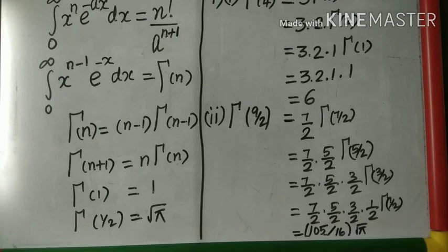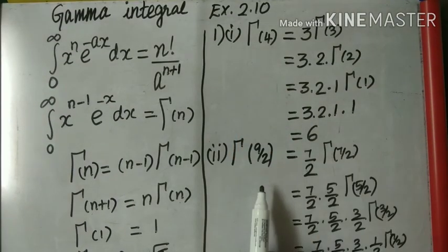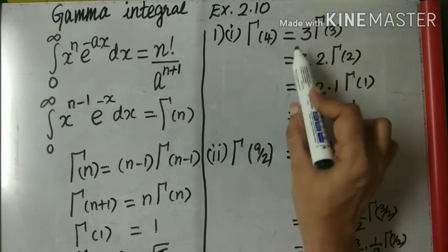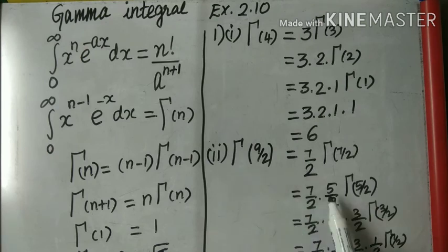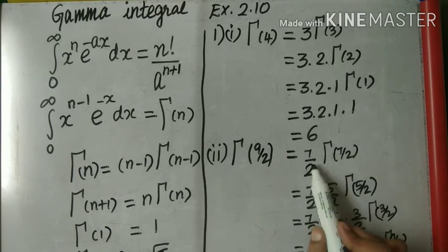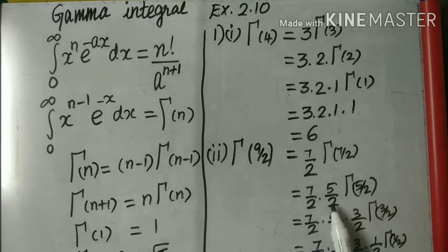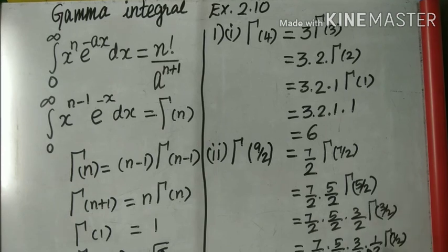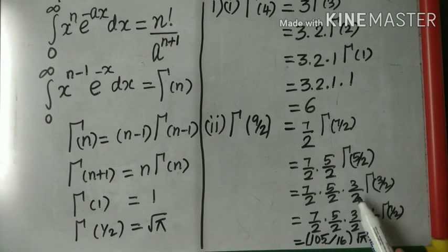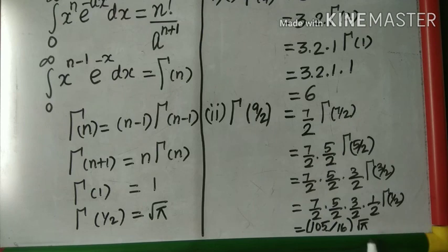We must know how to write gamma for a whole number and also for a fraction. For a whole number like 4, write the previous number then gamma of that, repeatedly until reaching gamma 1 which equals 1. For a fraction like 9/2, the previous number is 9/2 minus 1 equals 7/2, then 5/2, then 3/2, then 1/2. When we finally reach gamma half, the value is root pi. Multiply all the preceding factors and write the answer.